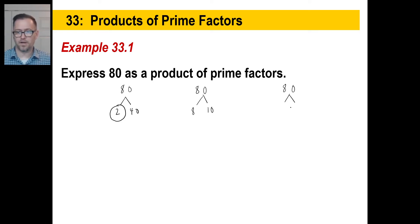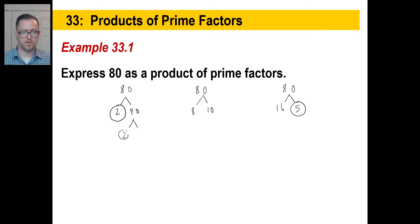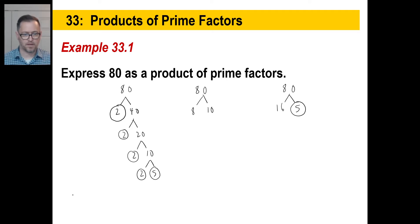Somebody over here might say this is 20 times 4, or maybe 16 times 5 is 80 — and 5 is a prime number. On the 2 times 40 branch: 40 is another even number, so 2 times 20, then 2 times 10, then 2 times 5. These are all prime numbers. So we get 2 times 2 times 2 times 2 — we'll call it 2 to the 4th power — times 5. That is the breakdown of all the prime factors of 80.